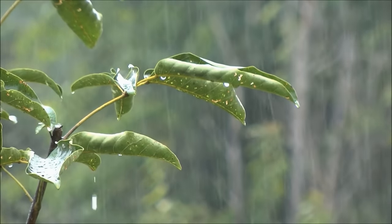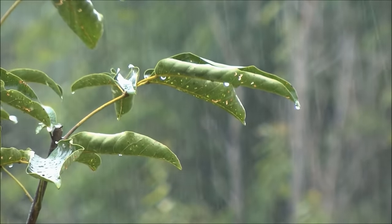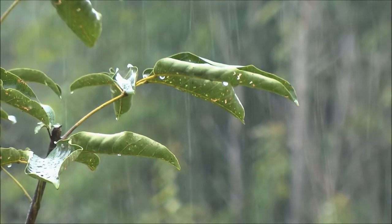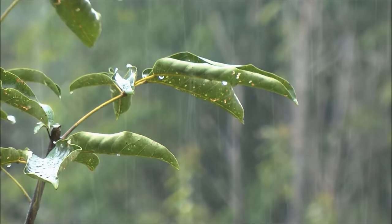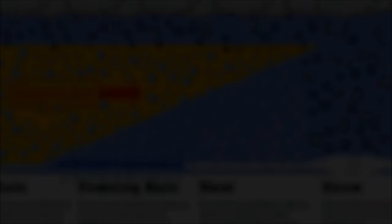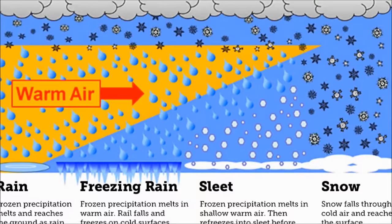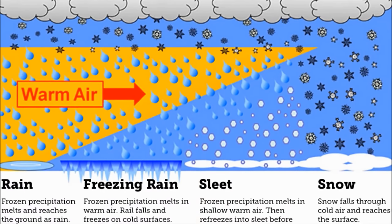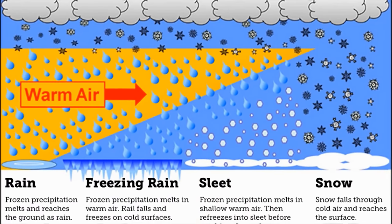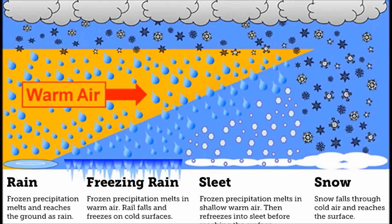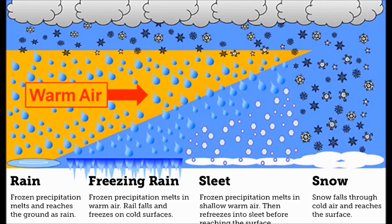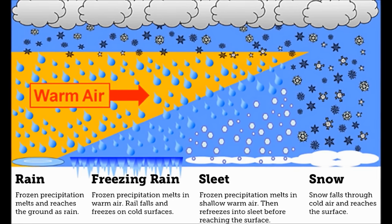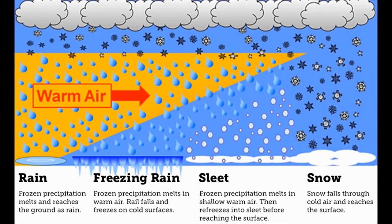Precipitation is water that falls from the sky, but there are several different kinds. If temperatures are warm enough, water falls as rain. If temperatures are freezing but only near the ground, the raindrops will freeze when they hit the ground — this is called freezing rain. If the layer of cold air is thicker, the raindrops will freeze while still in the air, falling as separate ice pellets called sleet.